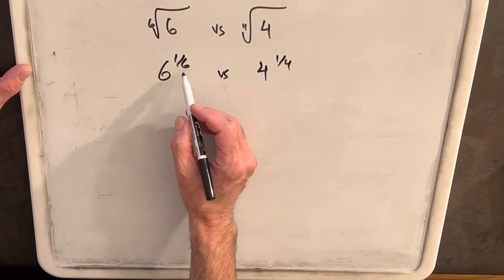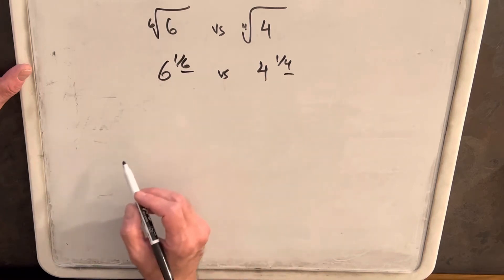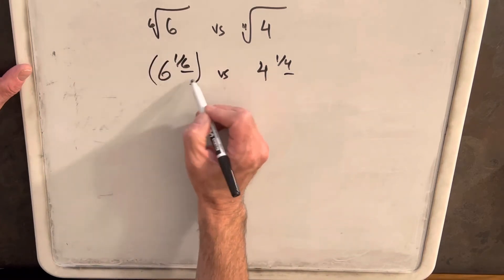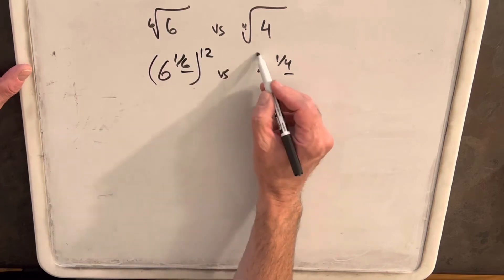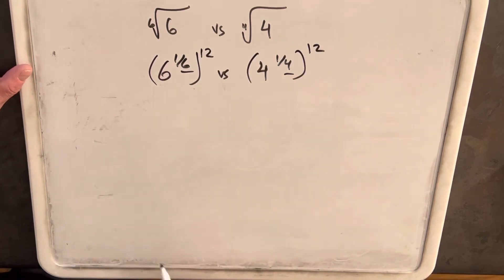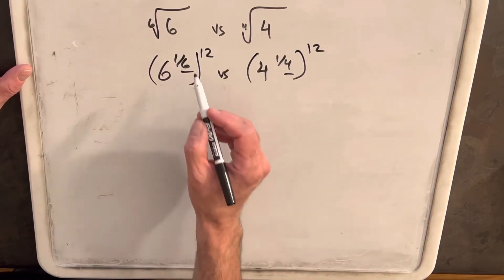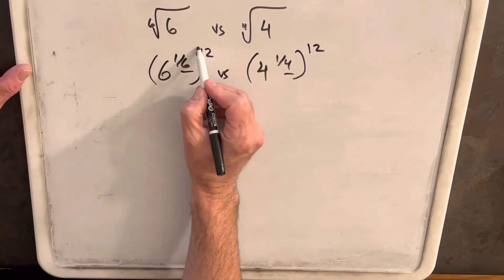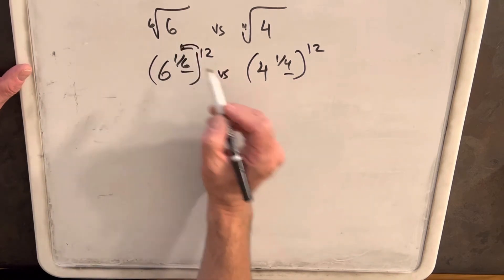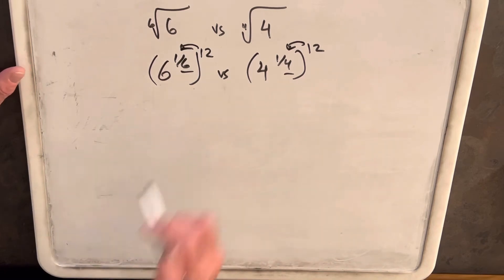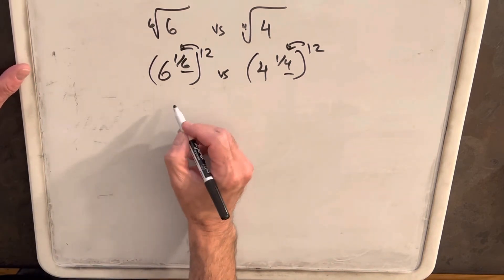Then I want to get the least common multiple of 6 and 4, which is going to be 12. I just want to get this to be a whole number exponent. What we can do is multiply in here to get a whole number, an integer exponent.